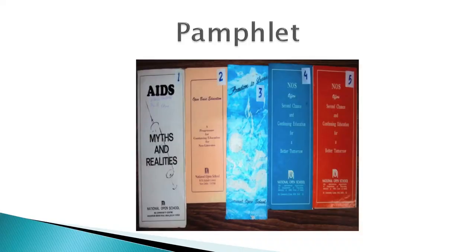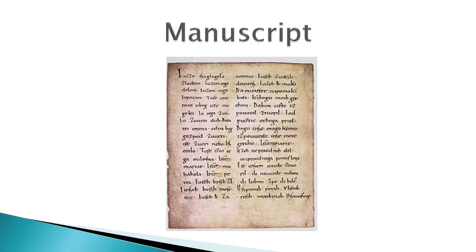There are also pamphlets and manuscripts, which are different from books. A pamphlet is an unbound printed publication with no cover or with a paper cover. It may consist of a minimum of 5 pages and a maximum of 48 pages, exclusive of the cover page. A manuscript is a term used for a document written or typed by a machine such as a typewriter or computer. The word is often used to distinguish an author's original version of a work from the printed copy. Manuscripts also refer to any handwritten document from ancient times until the introduction of printing in the 15th century. Such manuscripts are called historical manuscripts.